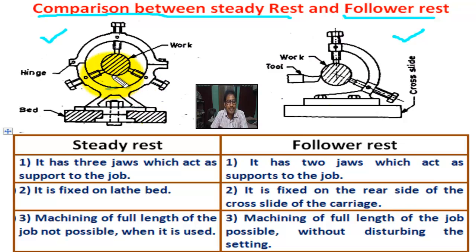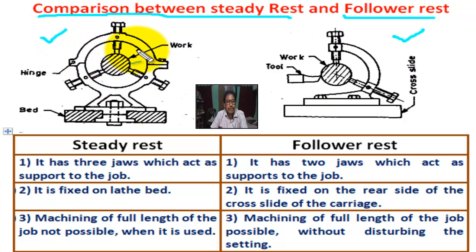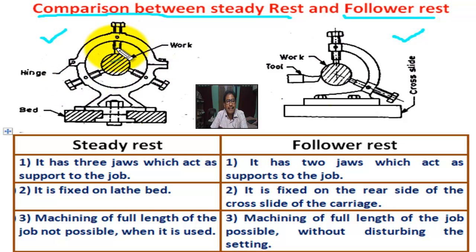This is the steady rest. It is made of cast iron and can slide on the lathe bed guide. It is attached with the lathe bed and can be clamped at any position. The upper portion of the steady rest is hinged at one end, facilitating the removal of the job without disturbing the steady rest. There are three jaws in the steady rest — two in the lower portion and one on the upper portion.